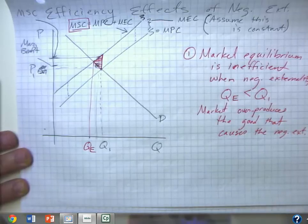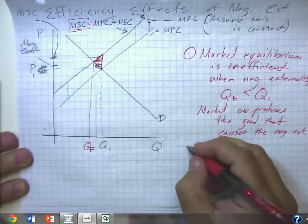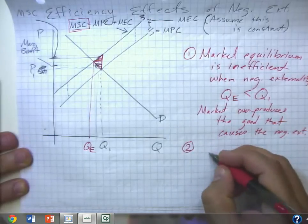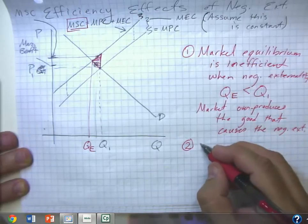Do notice though that the efficient level of production is not zero. It's not that just because a good has some negative externality associated with it, that it's efficient to not produce it at all.